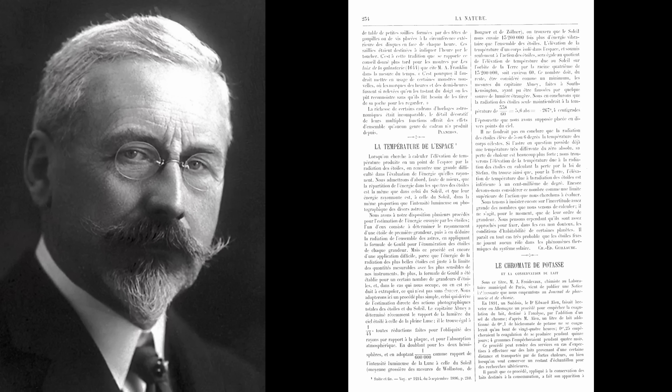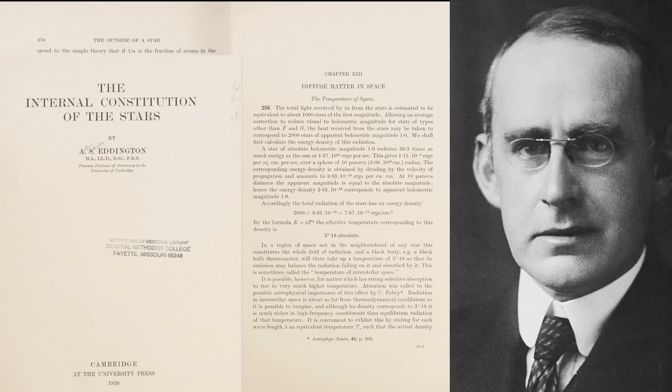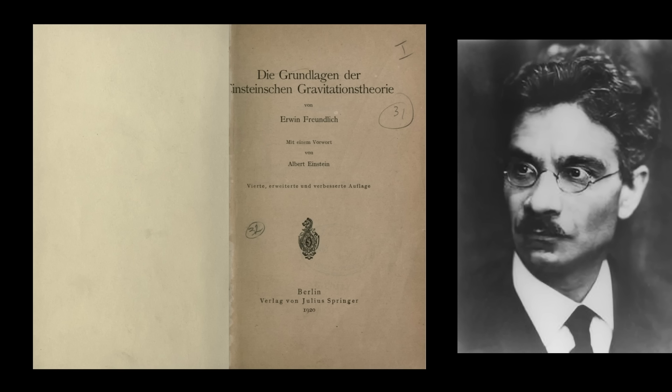In 1896 Charles Guillaume calculated that the combined light of stars in an infinite, static universe would produce a background temperature of about 6K. Arthur Eddington refined this estimate in 1926, predicting a value closer to 3K.